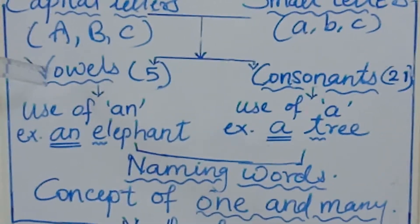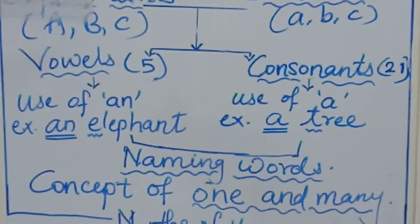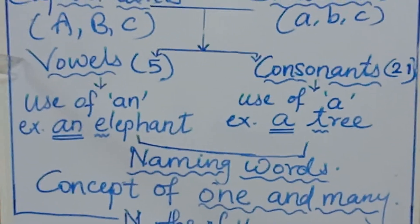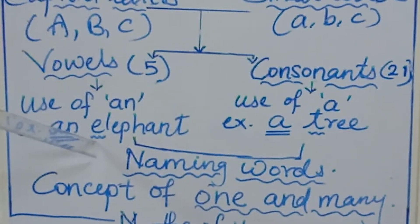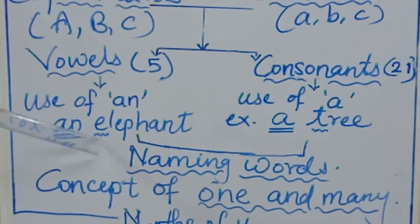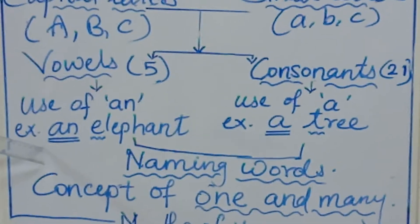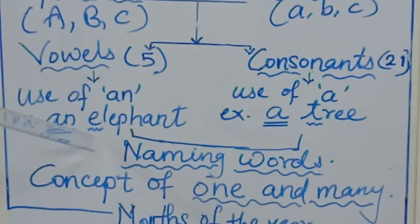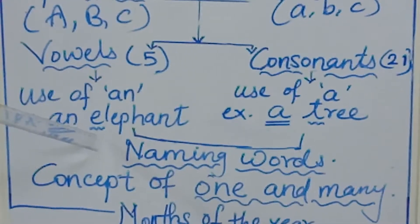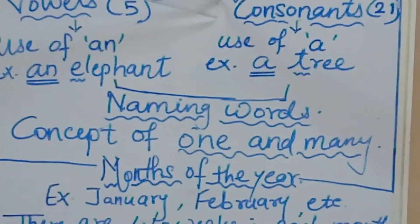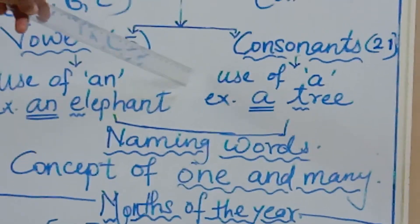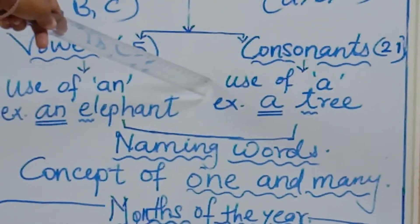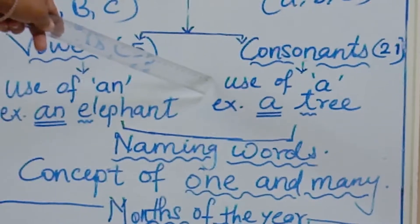The remaining 21 letters are known as consonants. When we use a vowel as the starting letter of a word, at that time we use 'an' — for example, 'an elephant,' 'an umbrella.' Whereas when we use a consonant as the first letter of a word, we use 'a' — for example, 'a tree,' 'a boy,' 'a chair.'